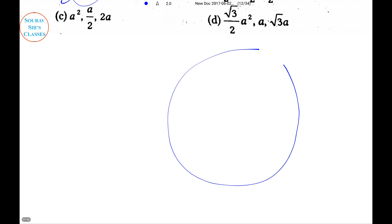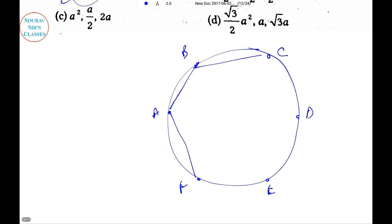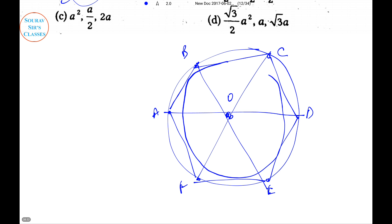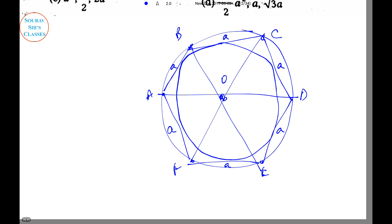For reference, here is the diagram. Label the hexagon vertices A, B, C, D, E, F and connect them. Connect diagonals B-E and others. The inscribed circle sits inside and the center is O. All the side lengths are equal to a. This is the simple way of drawing a hexagon and finding its area.